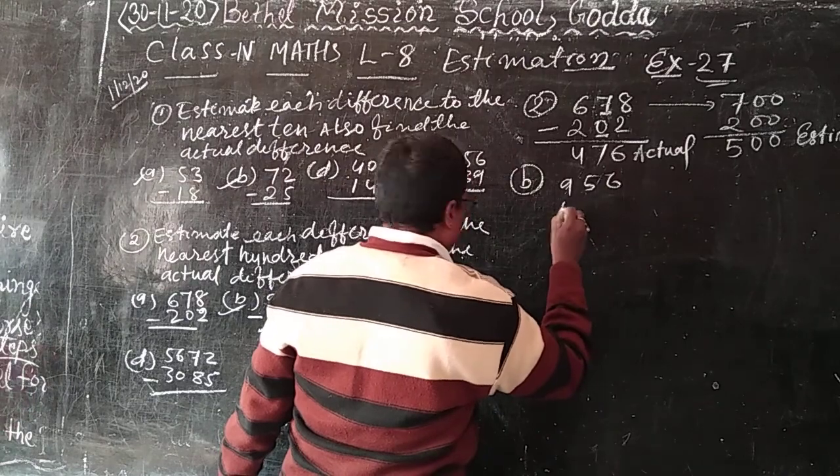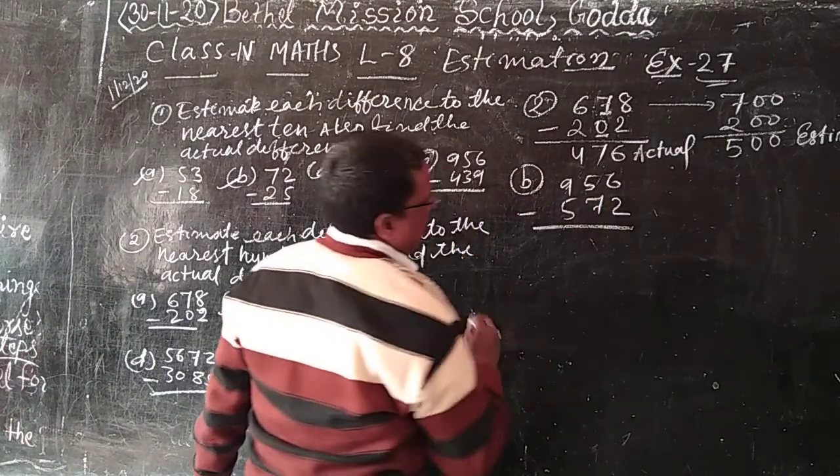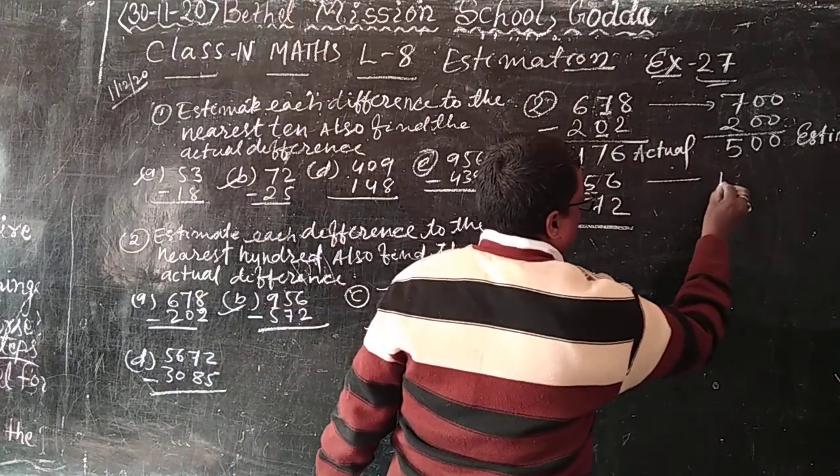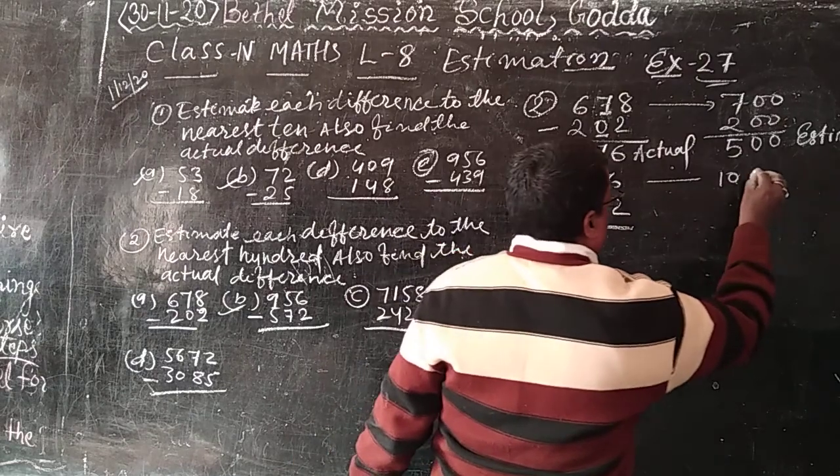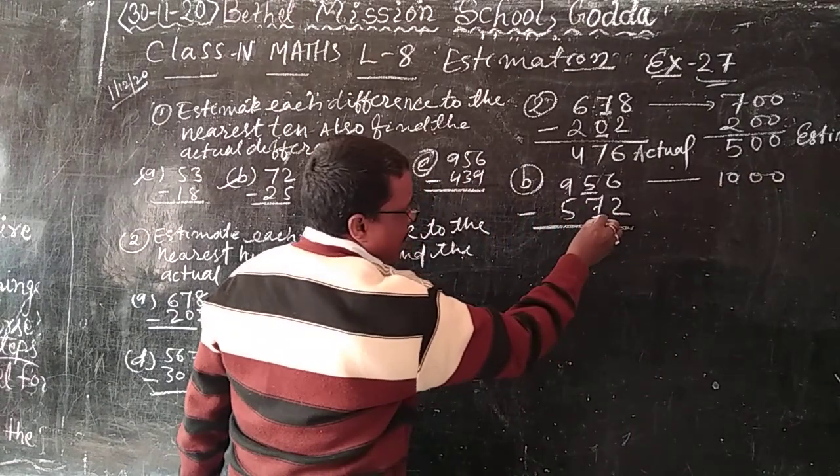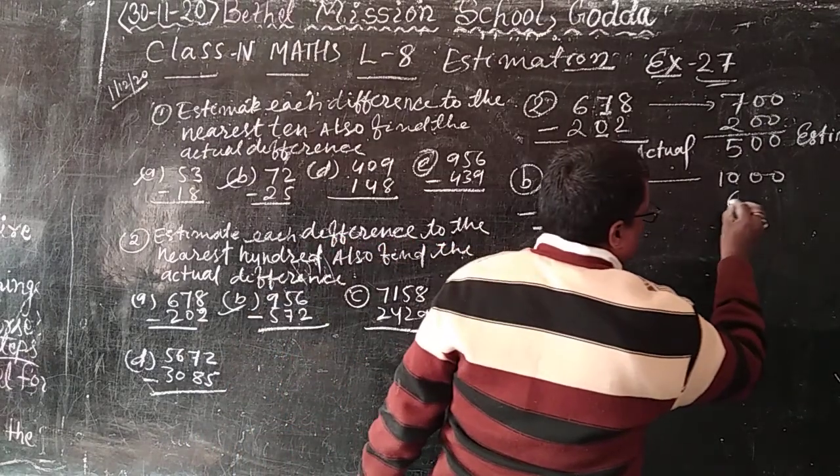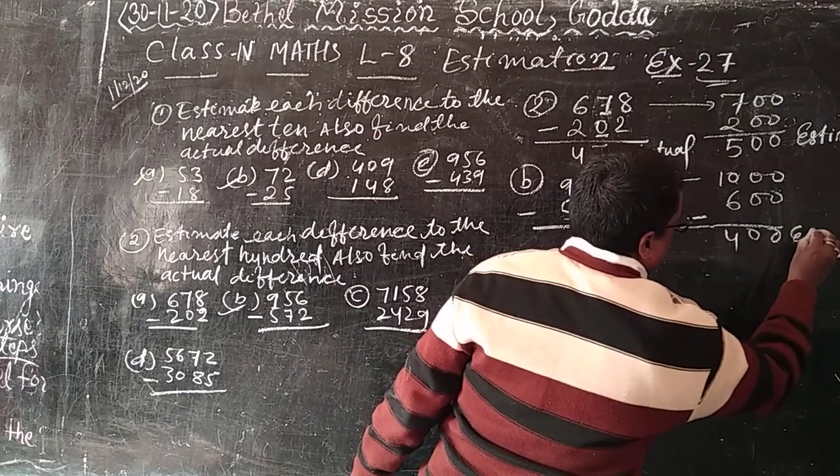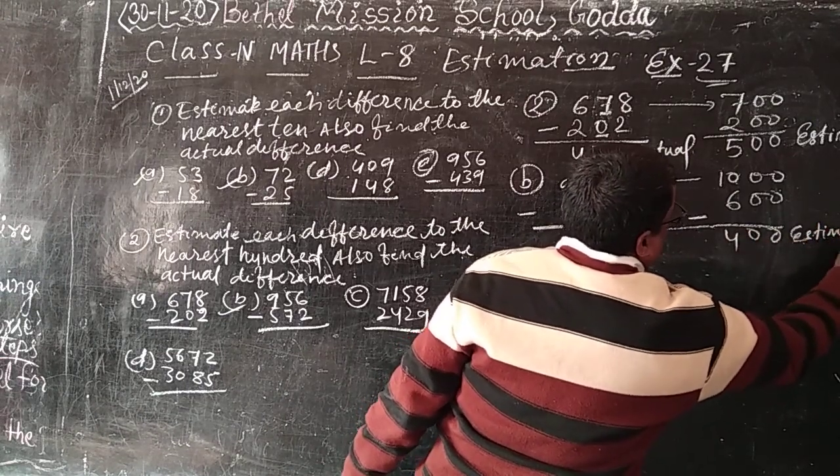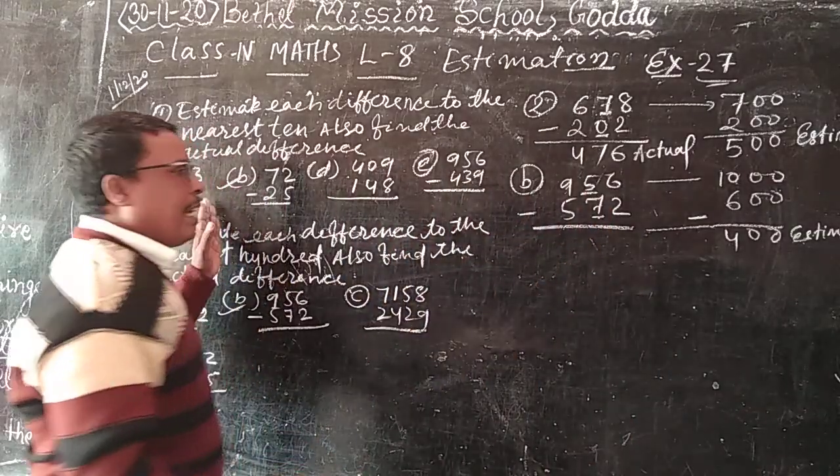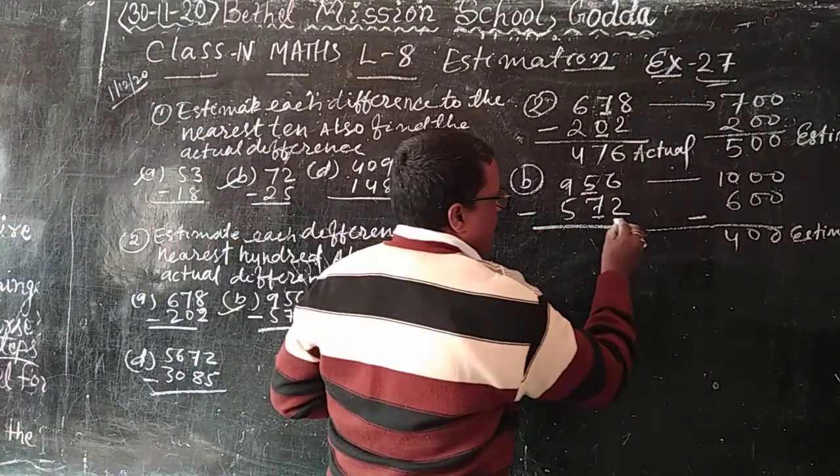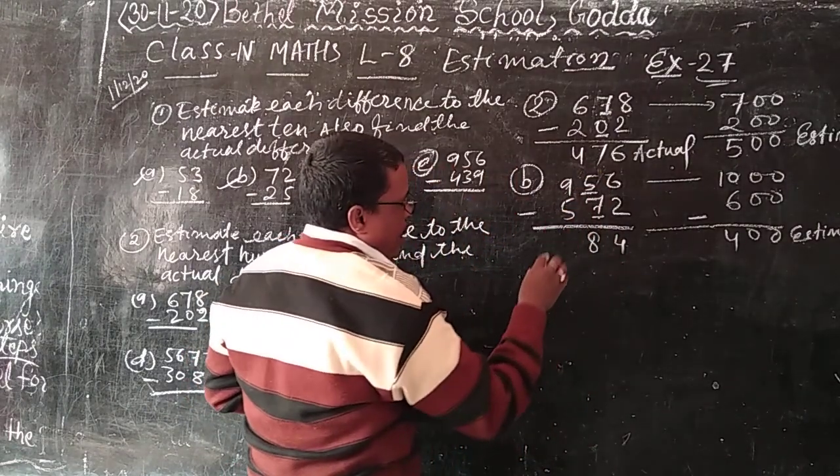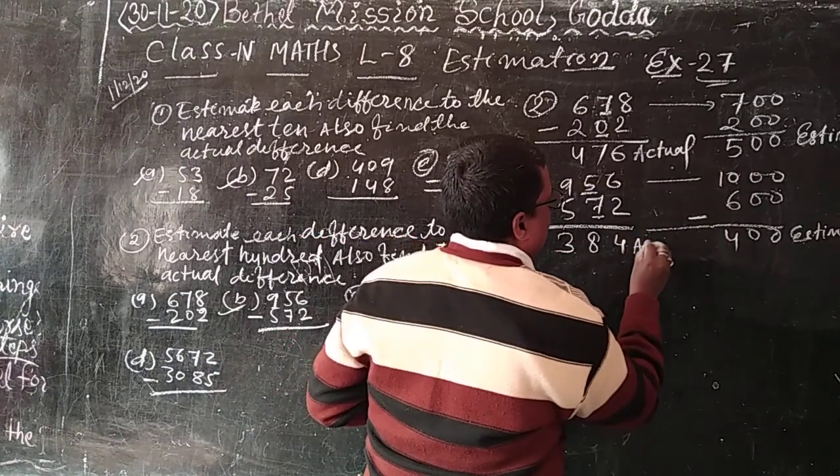B number, 956 minus 572. See here 5, so plus 1, 9 plus 1, 10, 1000. And this is 7 is more than 5, 5 plus 1, 600. 1000 minus 600, 400 is estimate. Nearest 100. And actual, 6 minus 2, 4. 5 minus 7, 8. 9 minus 5, 3. 384 is actual difference.